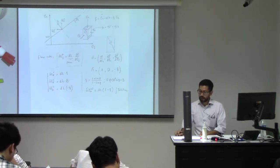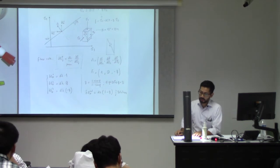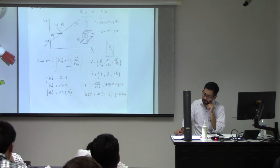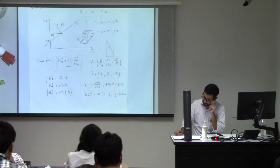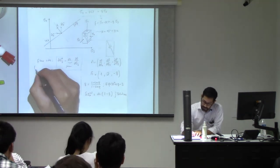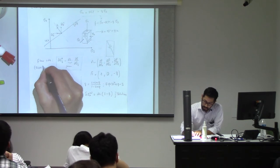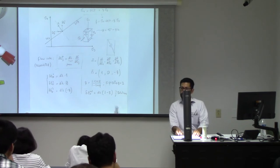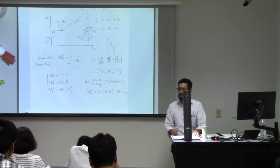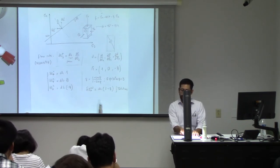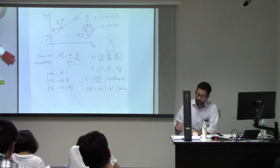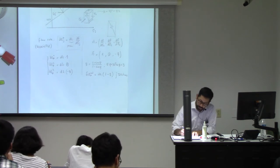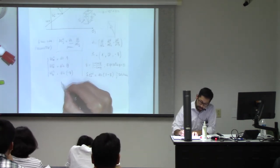So according to this Mohr-Coulomb criterion with what is called the associated flow rule — and I want to explain a bit what that means — with this associated flow rule, we predict that there's going to be dilation when we get to failure. That's what the equations tell. Let's make a drawing to make this a little bit easier to understand.